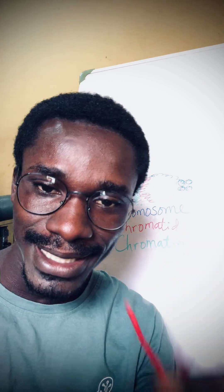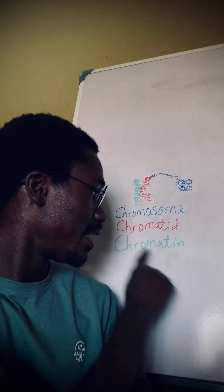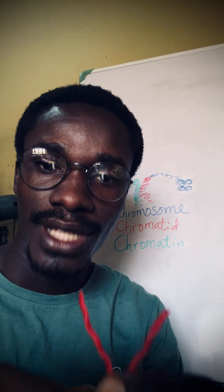This is our chromosome here. A chromosome is made up of two strands — this strand and this one make up the chromosome. Each of these strands is what we call a chromatid: chromatid one and chromatid two, which are sister chromatids.